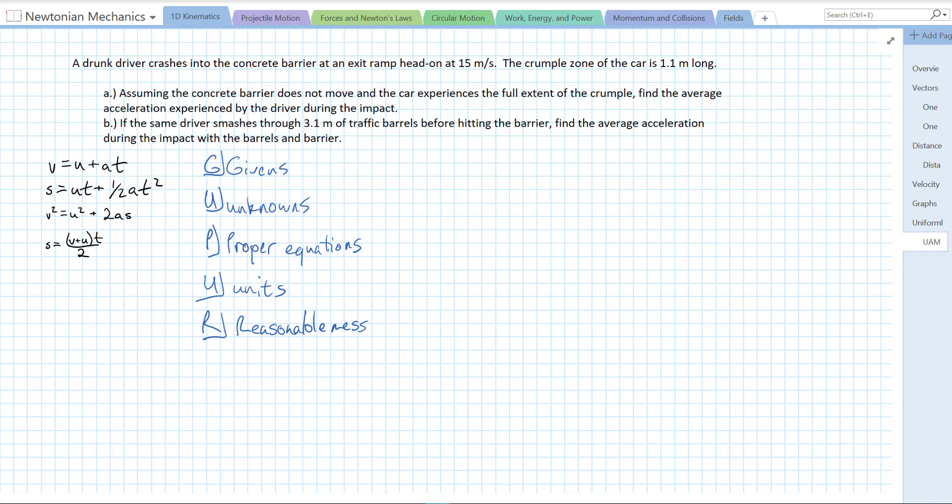Here's our question. A drunk driver crashes into the concrete barrier at an exit ramp head on at 15 meters per second. The crumple zone of the car is 1.1 meters long. In part A, assuming the concrete barrier does not move and the car experiences the full extent of the crumple, find the average acceleration experienced by the driver during the impact. And then part B, if the same driver smashes through 3.1 meters of traffic barrels before hitting the barrier, find the average acceleration during the impact with the barrels and the barrier.